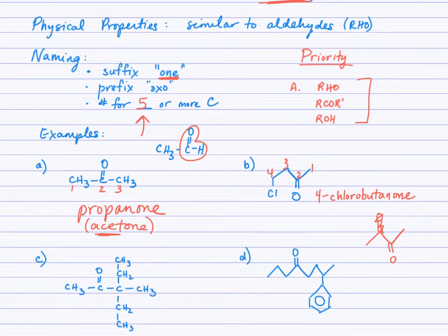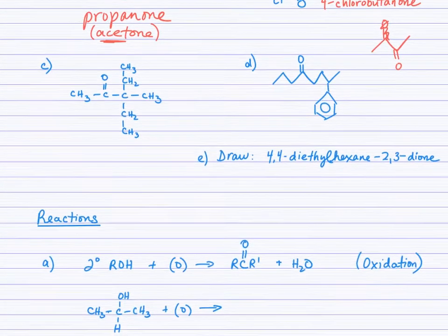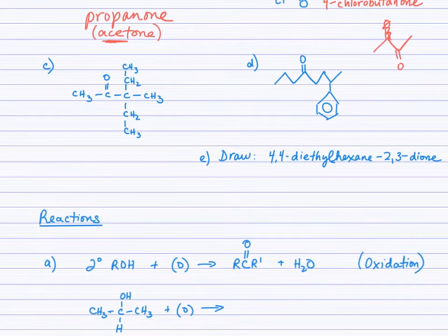So we'll slide the screen up here and you can try examples C and D and when you finish those move on and draw example E. 4,4-diethyl hexane-2,3-dione.